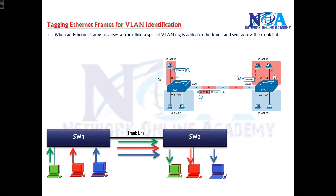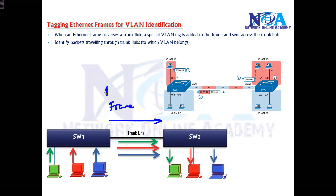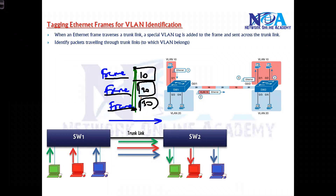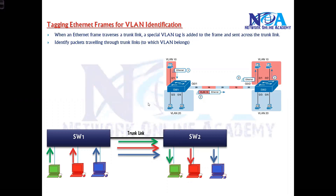The tag is added when information is sent over the trunk link. This tag is required for identifying packets when they are traveling over trunk links. Because if we just send frames without tags, all frames from VLAN 10, VLAN 20, and VLAN 30 have the same format — there is no difference. So we need to add something like 10, 20, or 30 to indicate which VLAN each frame belongs to, so that the receiving switch can identify which VLAN that frame belongs to.